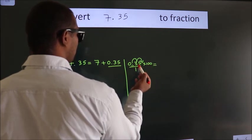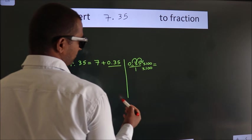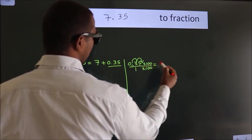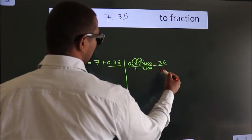Whatever you are multiplying in the numerator, in the denominator also do the same. Next, 0.35 into 100 is 35. 1 into 100 is 100.